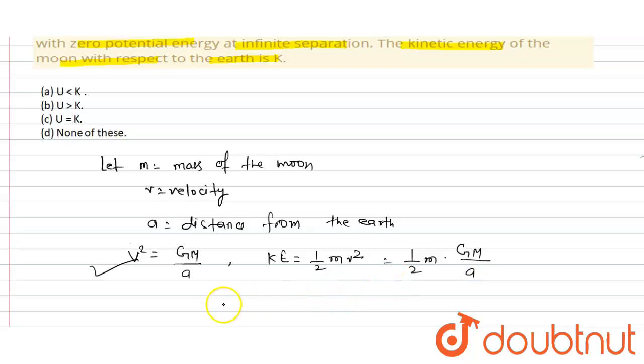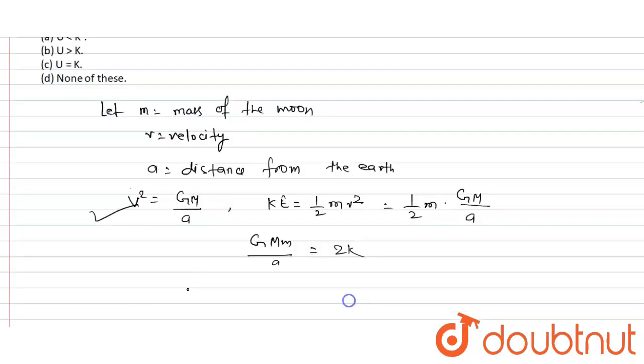So we get GMm/a = 2K. To find the relation between U and K, the magnitude of gravitational potential energy of the moon is given by U = GMm/a, which equals 2K.